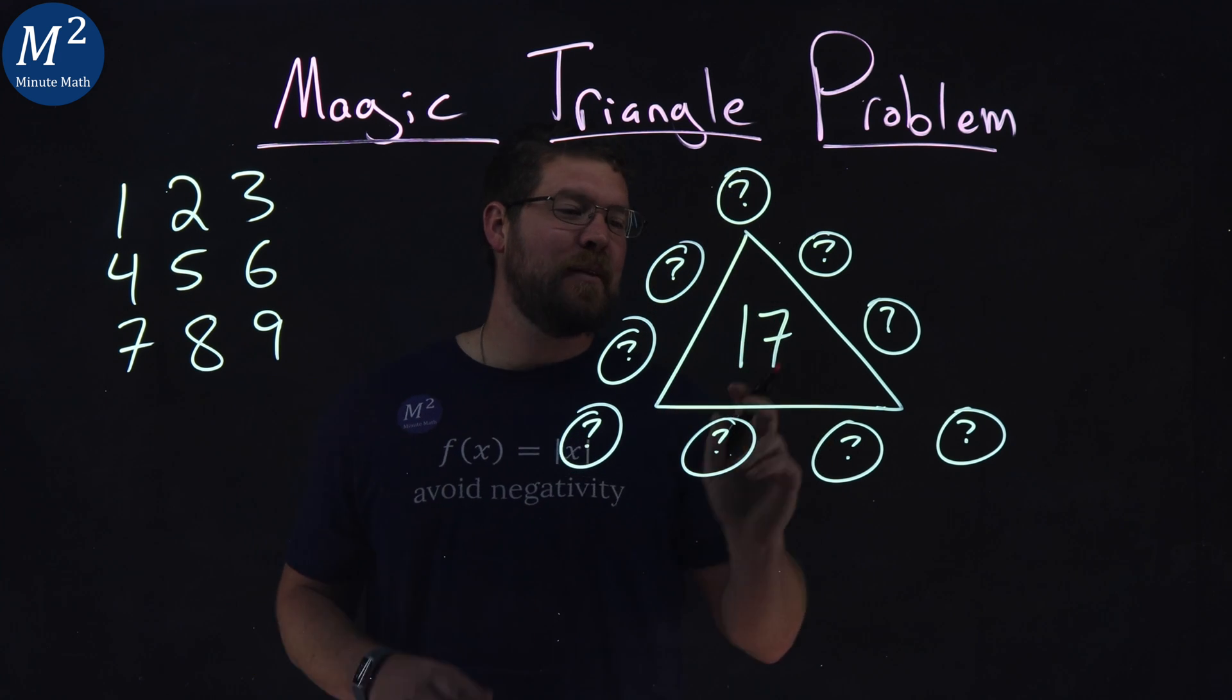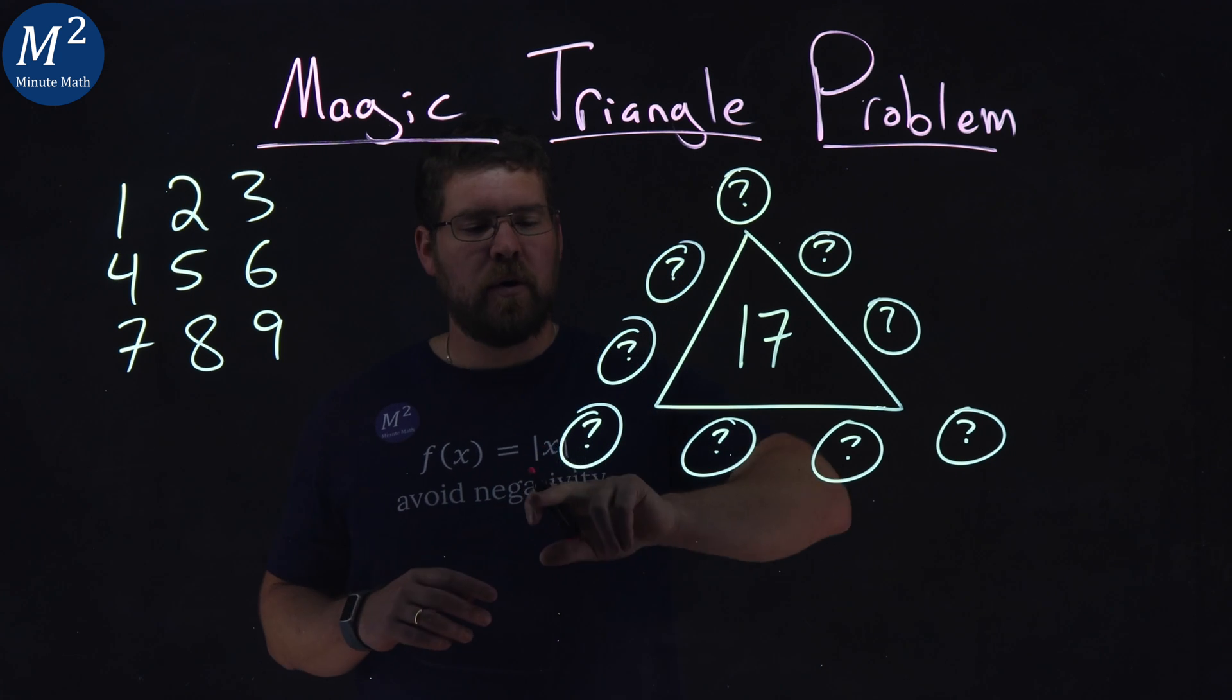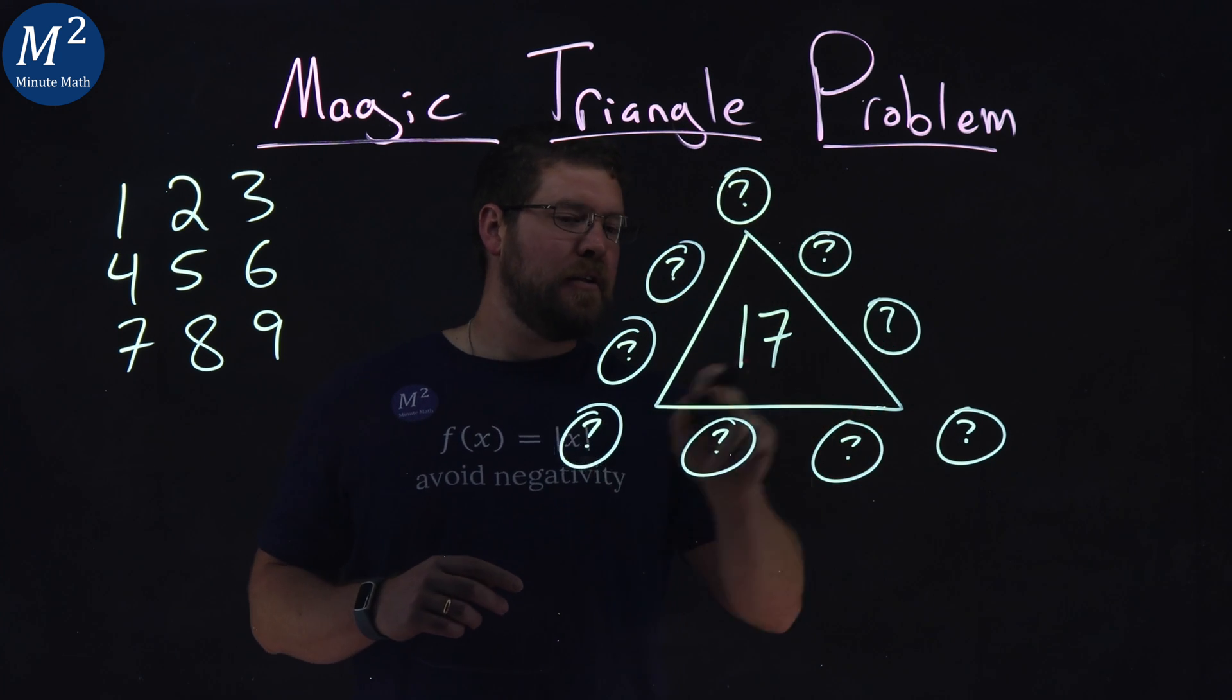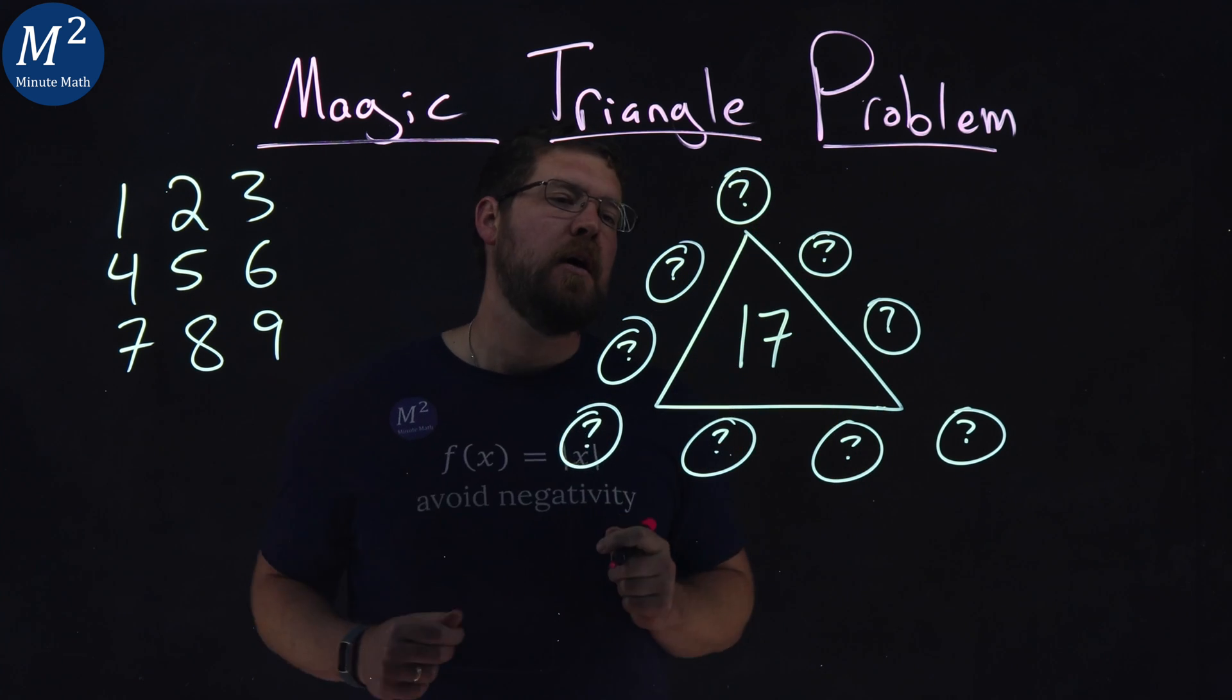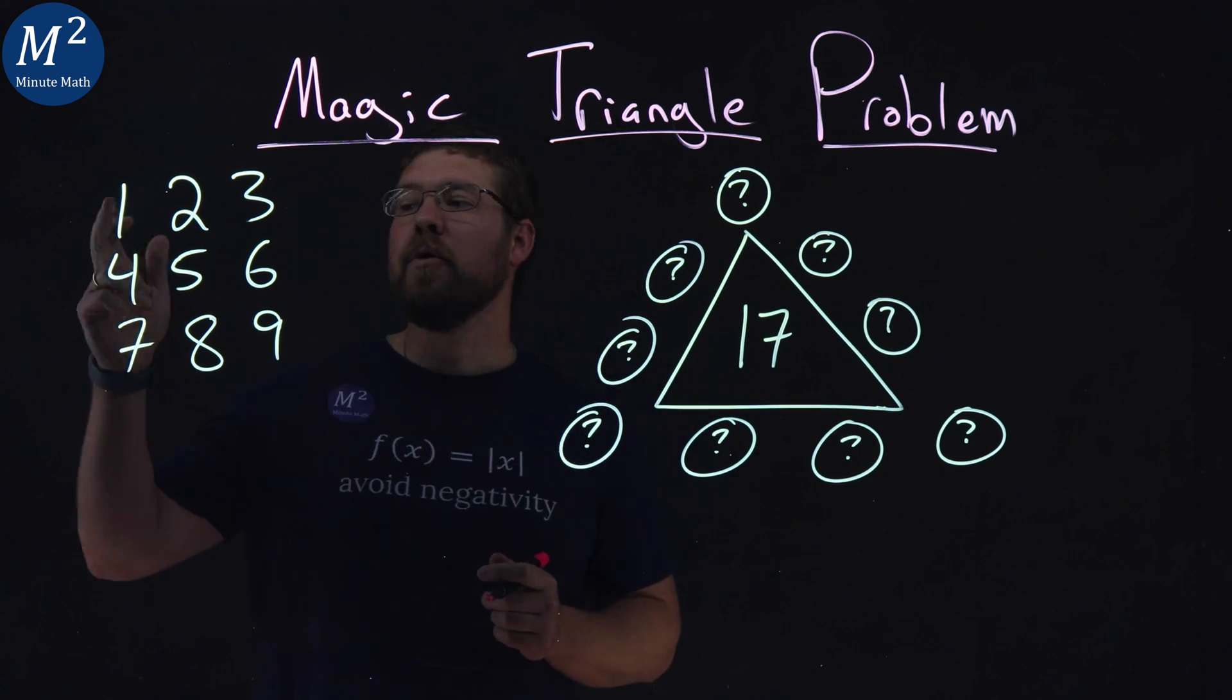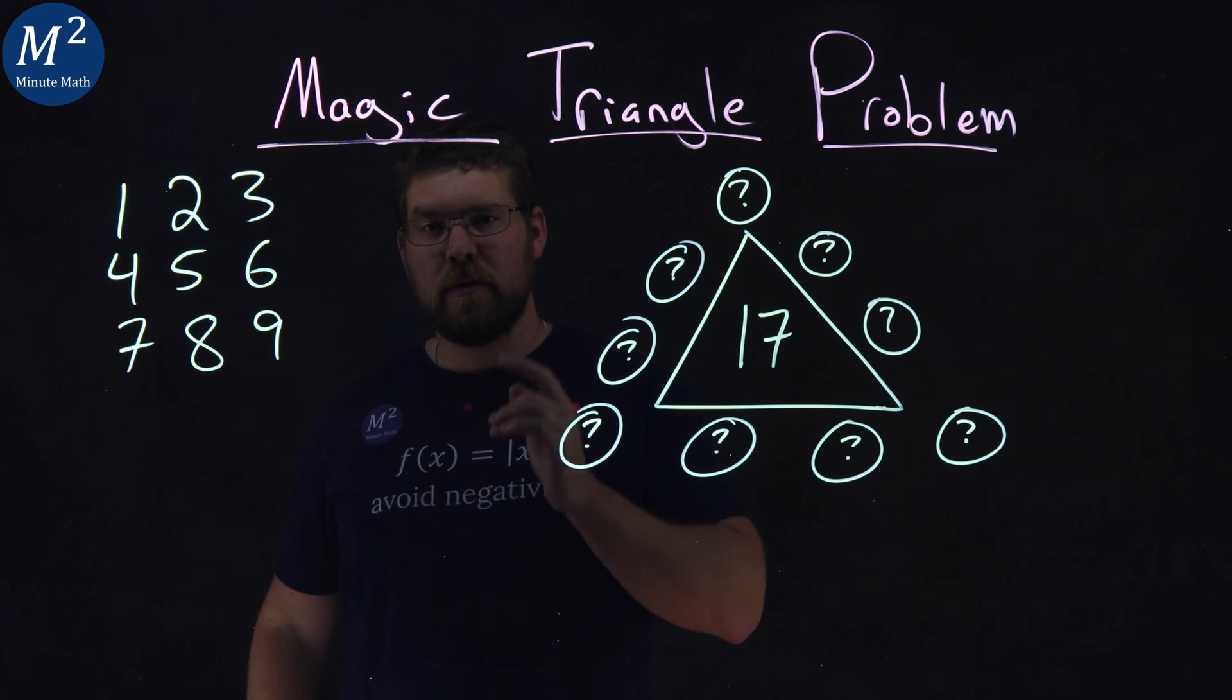What we have here is a triangle with 17 in the middle, and we got nine circles all the way around. Here's the clue. We add up any direction here across the side of the triangle, and that number has to add up to be 17, and we can only use one through nine, and each number can only be used once.